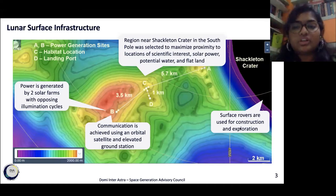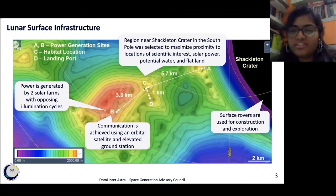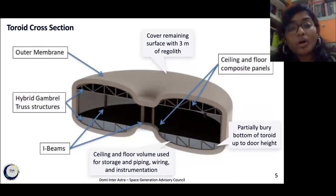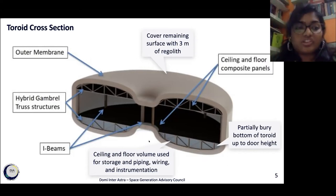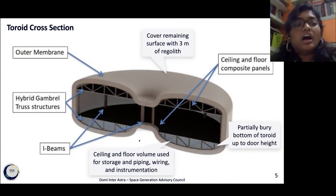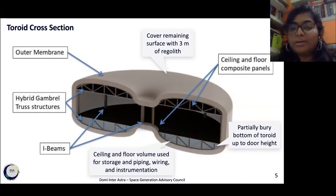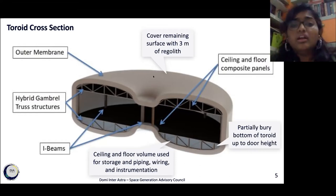Two satellites are selected for communication and relay information directly to the deep space network. We also have rovers for construction and exploration. Now, what exactly is at point C? These toroid shapes are what the modules of our settlement look like. This helps maximize the usable area and improve the efficiency of transferring vibrational loads to the ground. The steel structures internally support the regolith in case of depressurization. To minimize regolith required, we collect it from the bottom of the site and pile it on top. The toroid itself will be buried until the entrance, covered with around three meters of regolith for radiation shielding. The top and bottom spaces are used for storage, wiring, etc., and we have aluminum I-beams to hold the structure in place from inside.